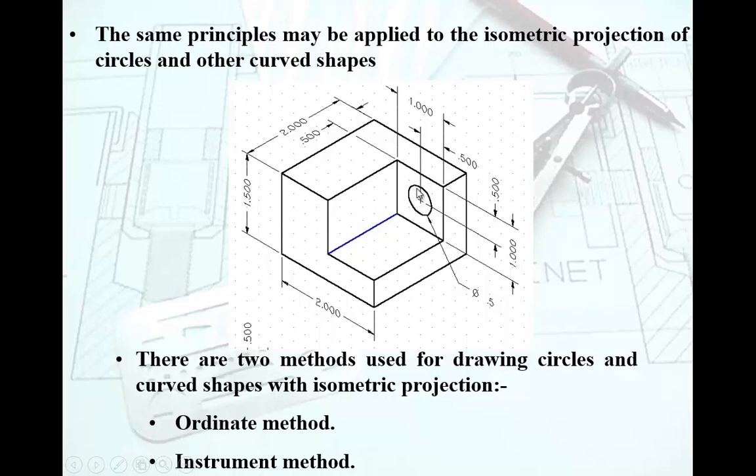As you can see with this circle here and all the holes, they are a good representation of how things will appear in isometry. If you are drawing a circle by hand, there are a couple of methods: ordinate method and instrument method.